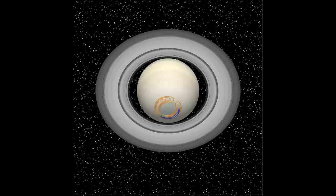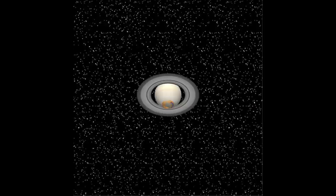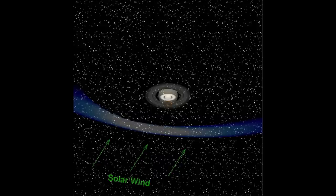The modeling work shows this change in current strength takes place as Saturn rotates about its pole. Let's now look at how the cycling of the so-called field aligned currents impacts the large-scale behavior of Saturn's magnetosphere.